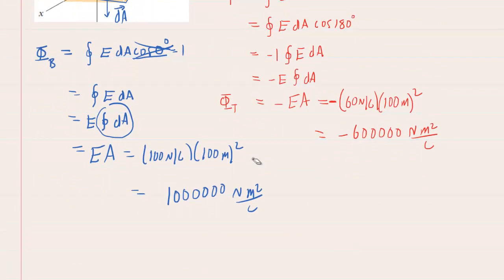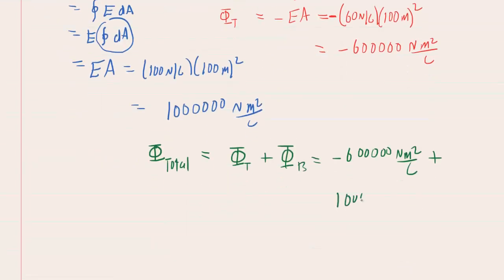We can get the total electric flux, which we just might say is phi total, by just adding the flux along the top and the flux along the bottom. So for the top, we got negative 600000 newton meters squared per coulomb. And then you're going to add that to what we got along the bottom. Probably should have used scientific notation here. But when we add these together, we're going to get a total flux of 400000 newton meters squared per coulomb. So that's our electric flux that we need to use with Gauss's law.